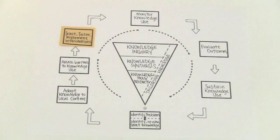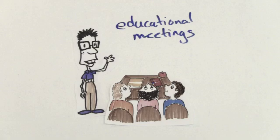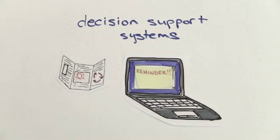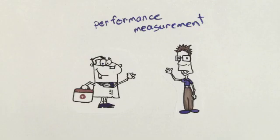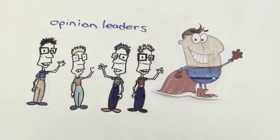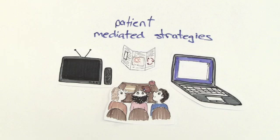The next step is to select an intervention and implement it to target those barriers so that the knowledge can be put into practice. You'll need to decide on the message, the target audience, the messenger, and the type of intervention you want to use. There are many types of interventions to choose from: educational strategies, decision support tools like reminder systems, performance measurement, audit and feedback, opinion leaders, and patient mediated strategies.